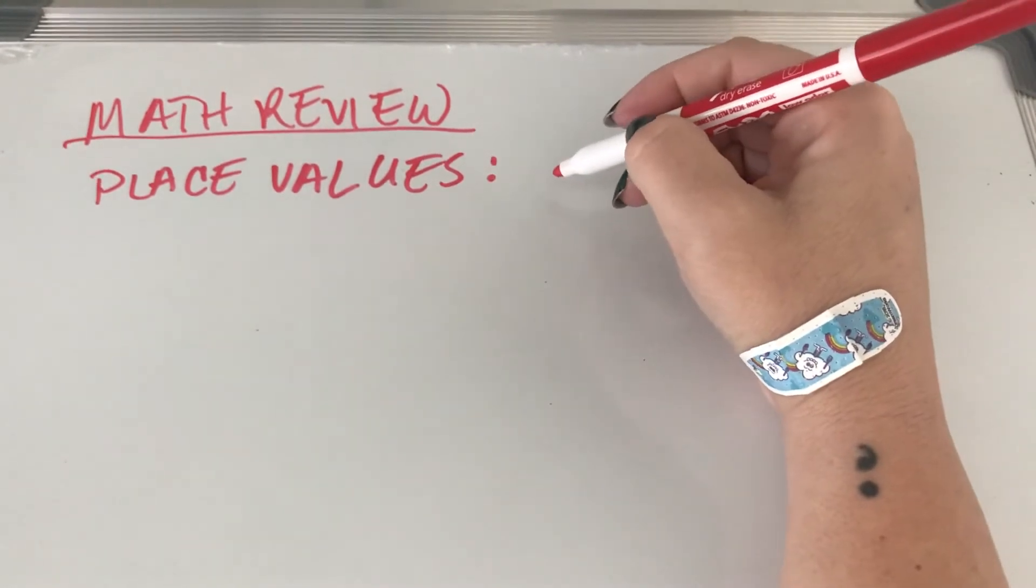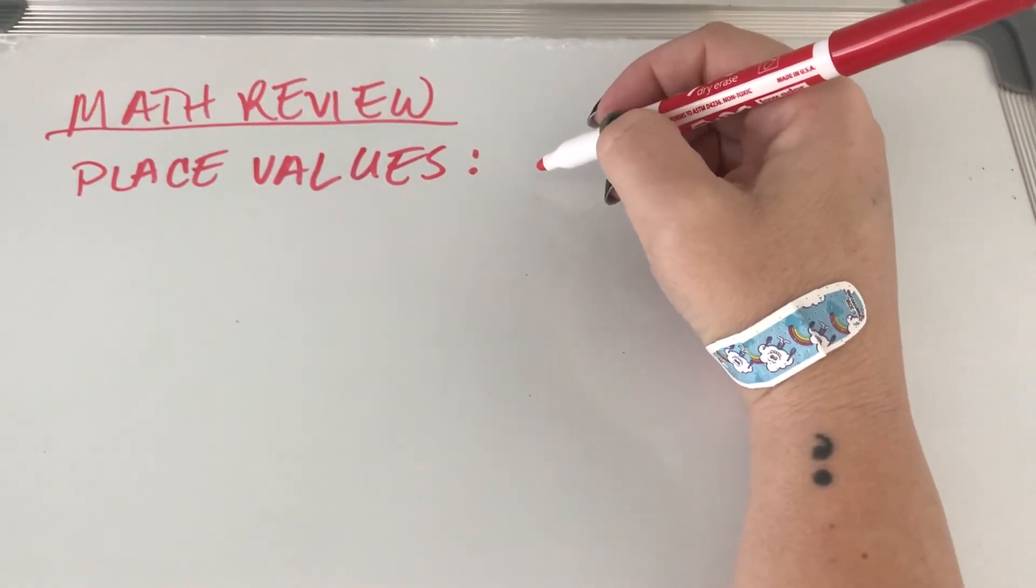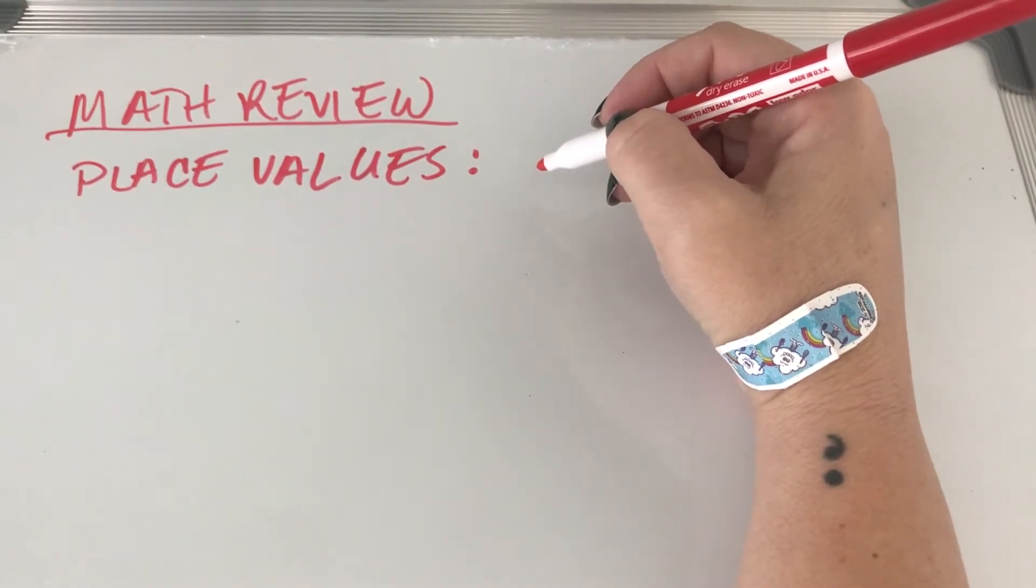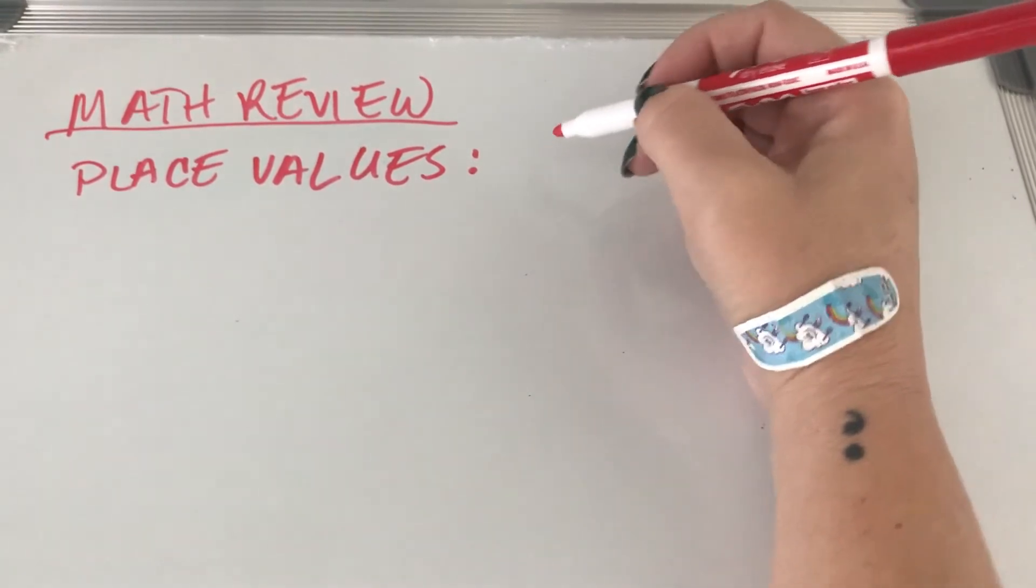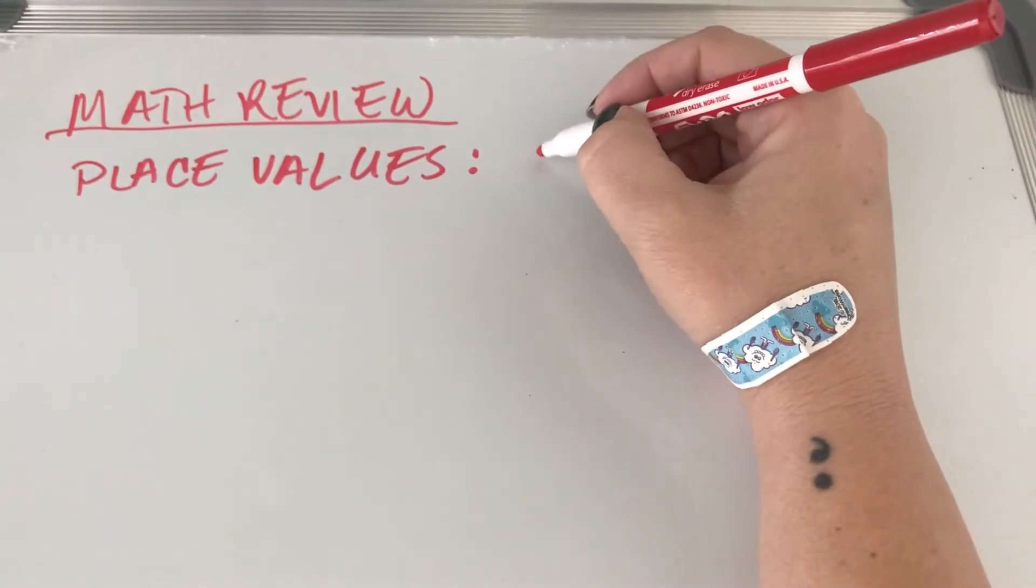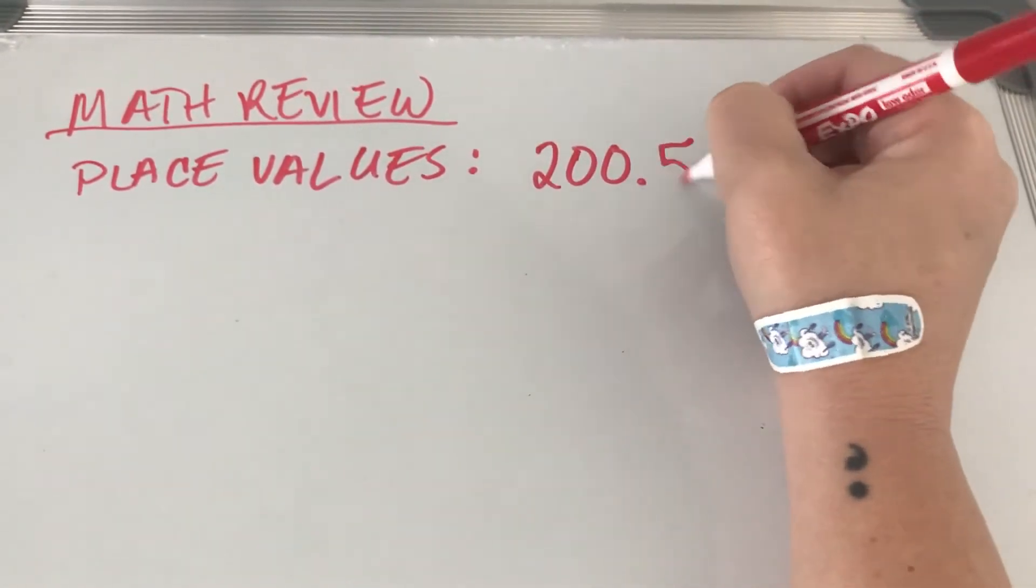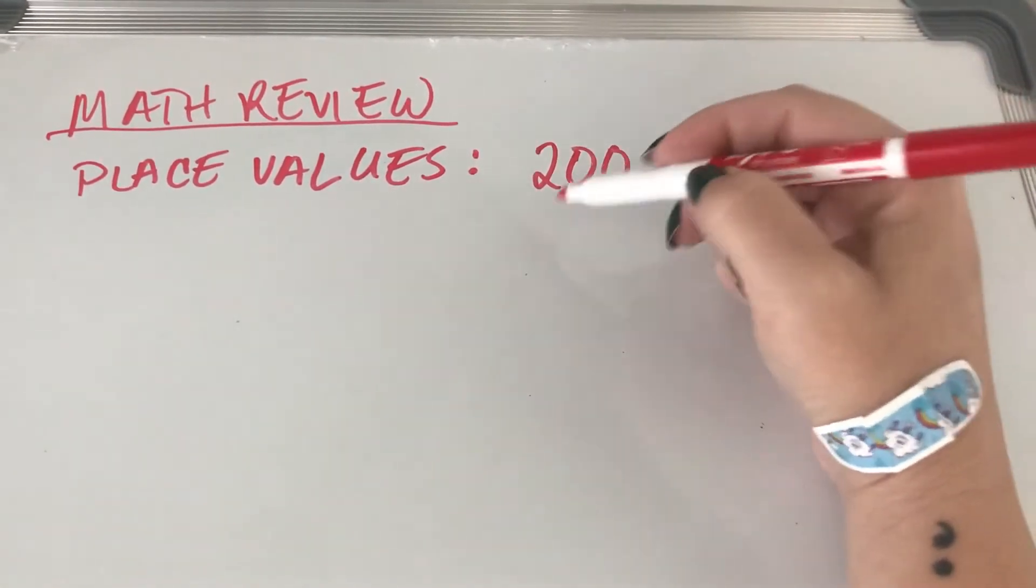So what do I mean by place values, guys? This is essentially just the way that we name particular place values. So let's say I have a number like this, right? I have, this would be the...